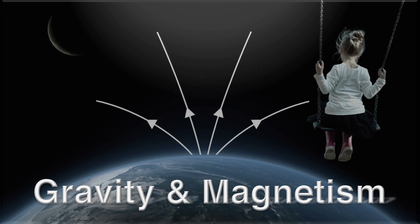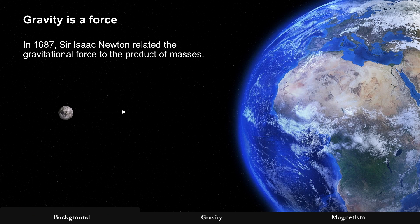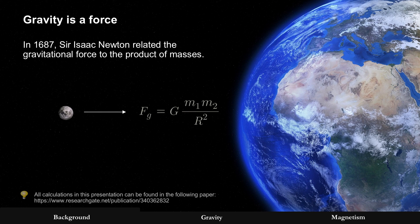Gravity and magnetism. We'll cover gravity first. It's a force, and Isaac Newton related the gravitational force to the product of two masses. There you see the moon, mass one, and the earth, mass two.